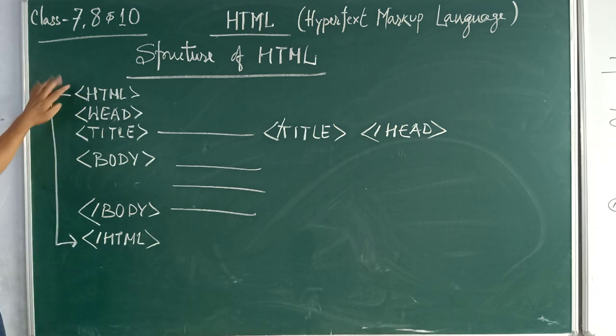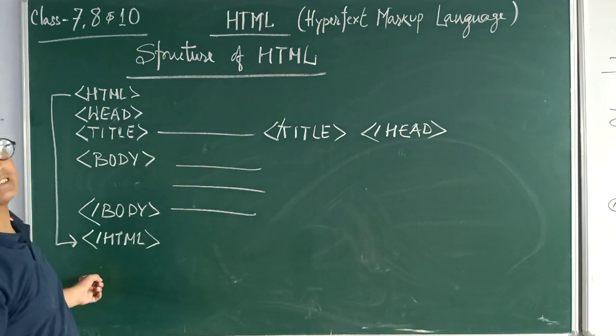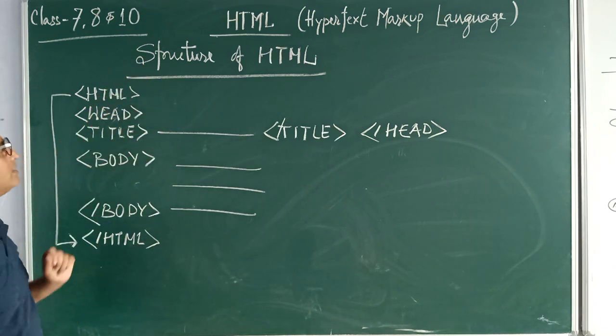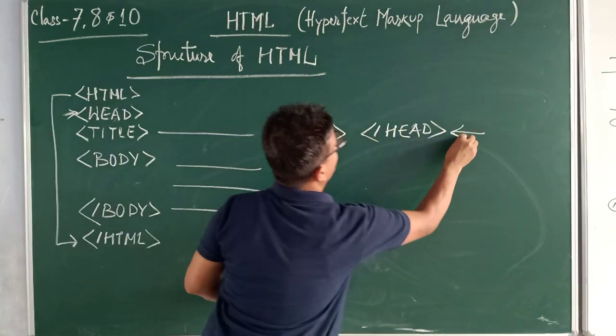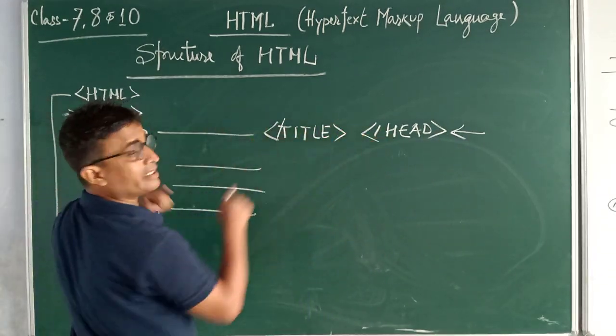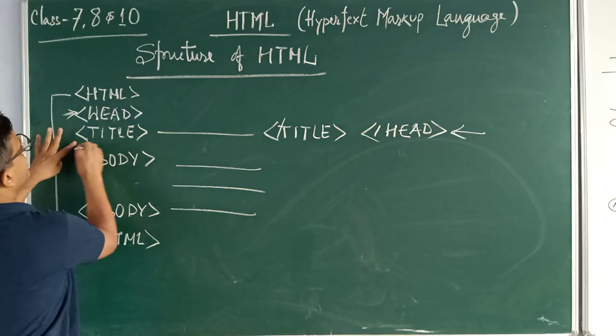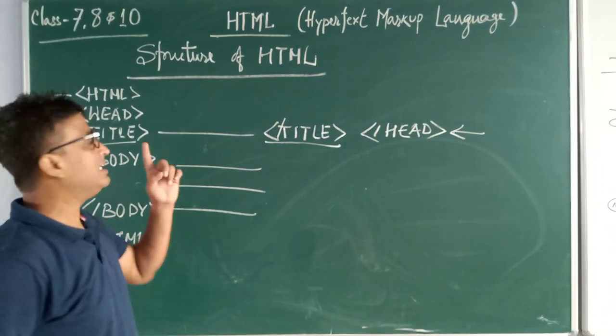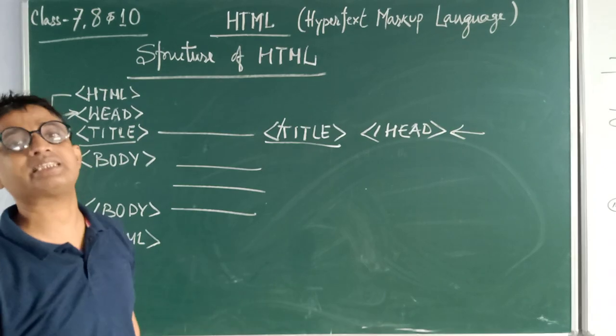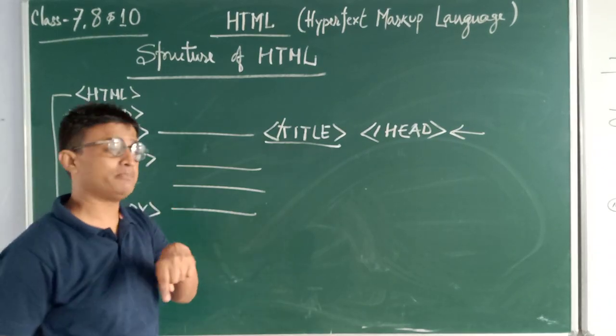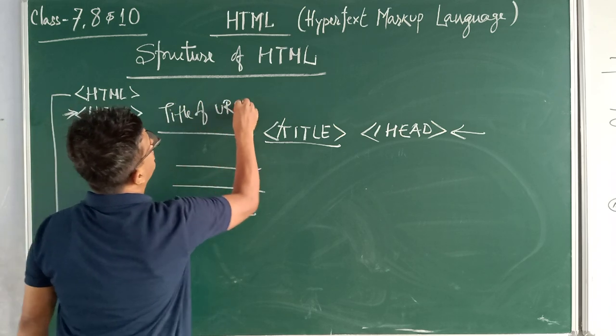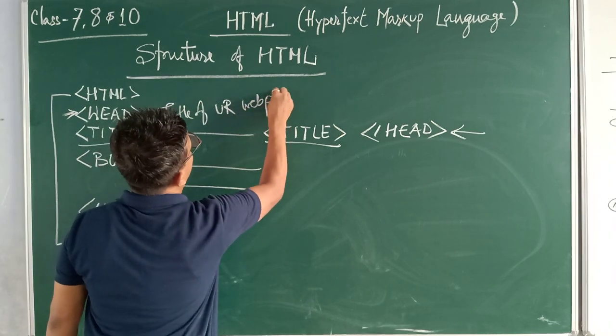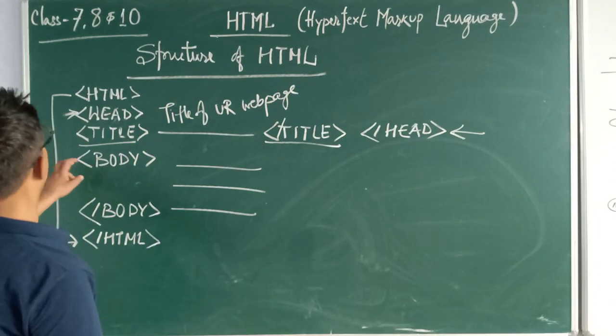We have started HTML under this angle bracket and we close this HTML. This is the opening and closing of the body of HTML. Number two section is head. We are starting here and closing here. In between this head, you will find title. What this title will do? This title will define the title of your web page.